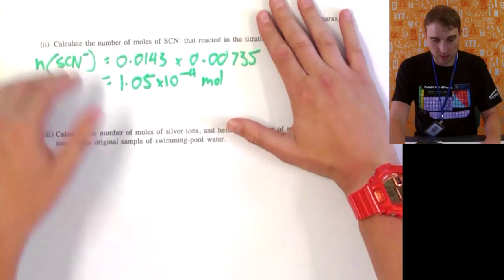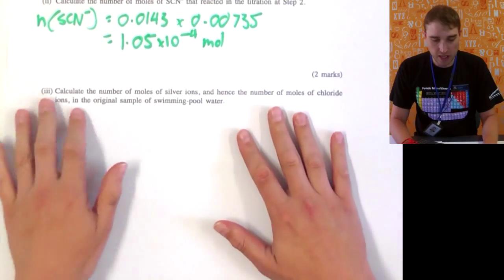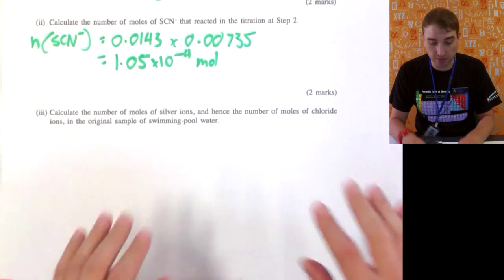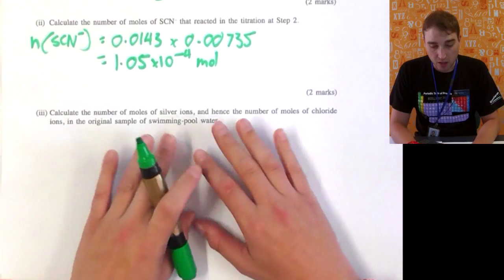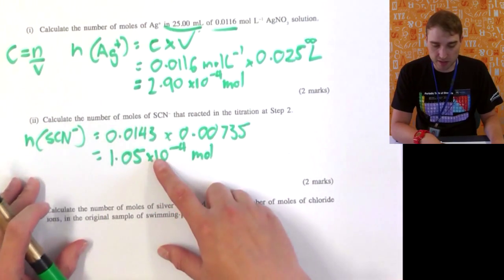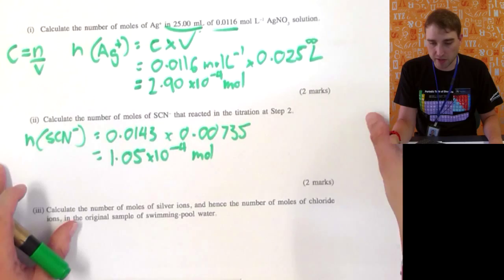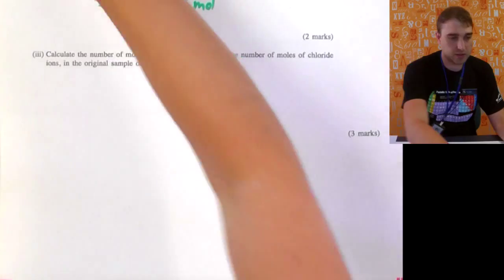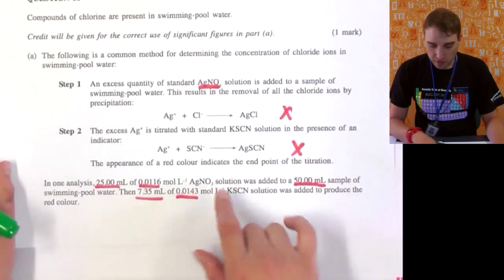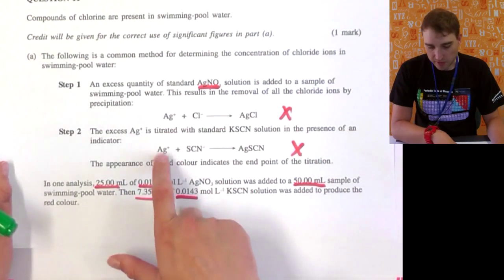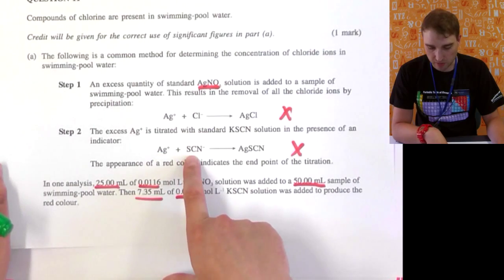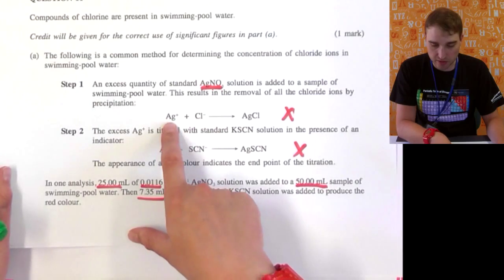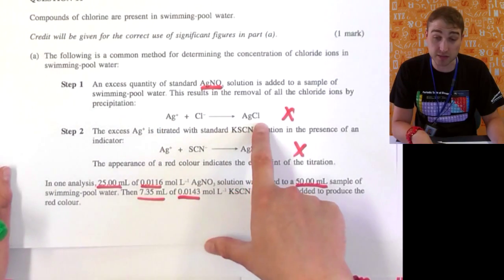Step 3: calculate the number of moles of silver ions and hence the number of moles of chloride ions in the original swimming pool water sample. We have a large number and a smaller number, and we need to look at the ratios from our equations. Looking at both equations, it's 1-to-1: one mole of silver ions reacts with one mole of SCN⁻ ions. It's also a 1-to-1 ratio between silver ions and chloride ions to make silver chloride.